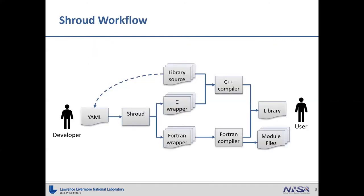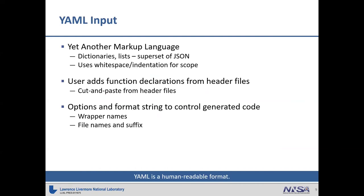The developer starts off by writing a YAML file. The little dash line indicates you're cutting and pasting out of your library header files. You run it through Shroud and get a set of C++ files and Fortran files that you feed into the compiler and load into your library. Shroud uses YAML as input — yet another markup language, just a list of dictionaries and lists, basically a superset of JSON. It uses whitespace for indentation and scope. The user can cut and paste from header files, and it provides a place to give options and format strings to control the generated code.